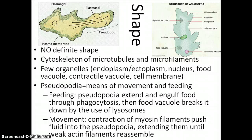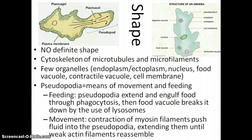Because of their small size, they have few organelles. They have an endoplasm and an ectoplasm, which you can see in the picture, a nucleus, a food vacuole, a contractile vacuole, and a cell membrane.